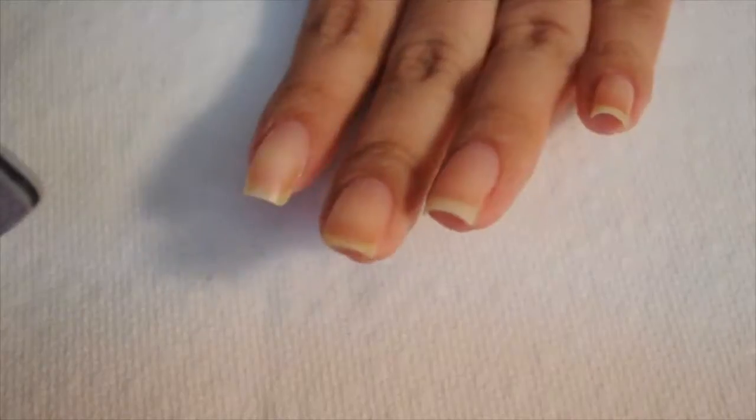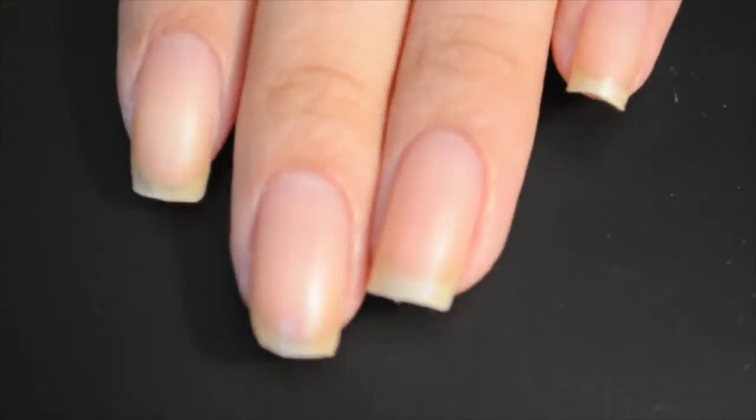For my other nails that are just naturally squared out, I just give them a more deeper, nicer square, like an even out square.